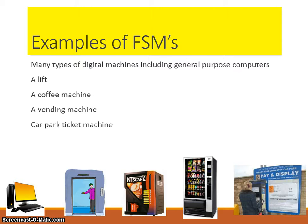Here are some typical finite state machine examples. Things like a lift: a lift can be in a state with the doors open on the ground floor, or doors closed on the first floor, or a state of moving between ground and first floor. We can think of a coffee machine — it may be in a ready state, a state where 10p has been inserted, or a state of dispensing. Think of a vending machine or a car park ticket machine. These are all classed as finite state machines.